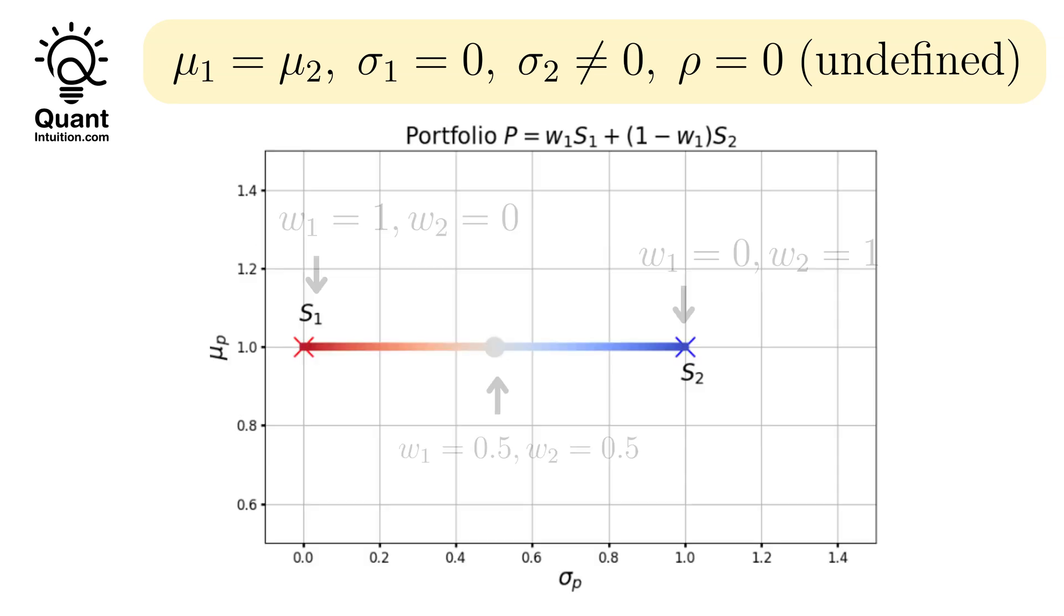This can be seen more clearly if we plot the 2D curve of muP versus sigmaP for each possible value of W1. Here, we start with W1 equaling 1 at S1, and if W1 decreases, we move towards S2. The grey circle in the middle represents an equally weighted portfolio, for which both weights W1 and W2 equal 0.5. This point lies directly in the middle between the two stocks.